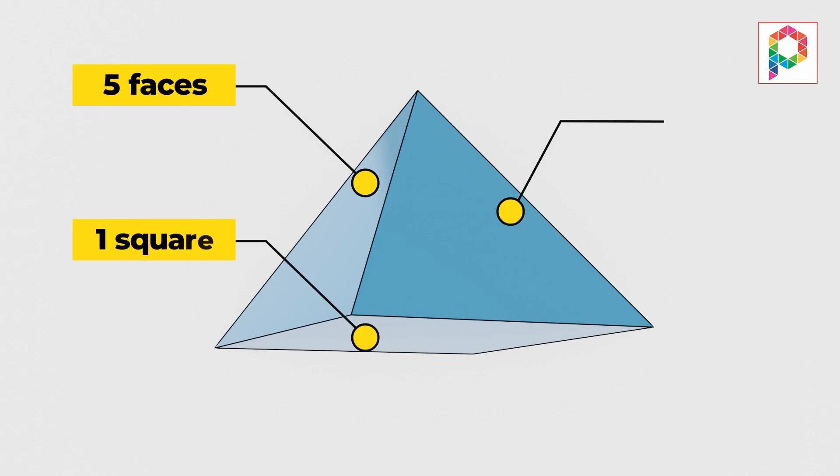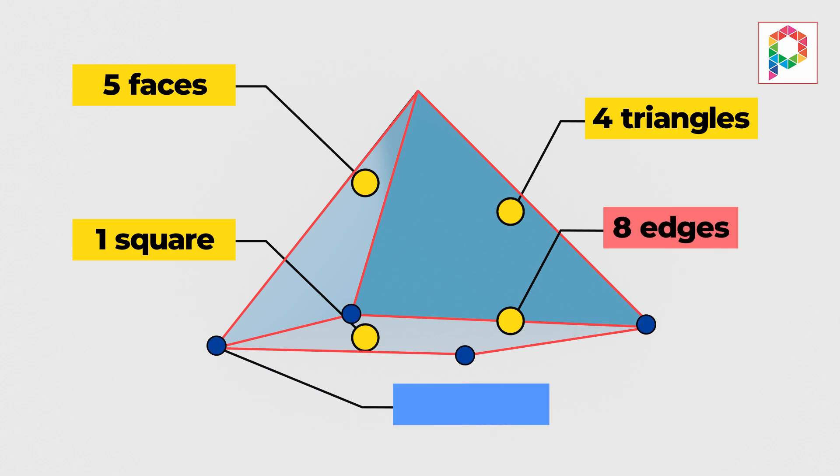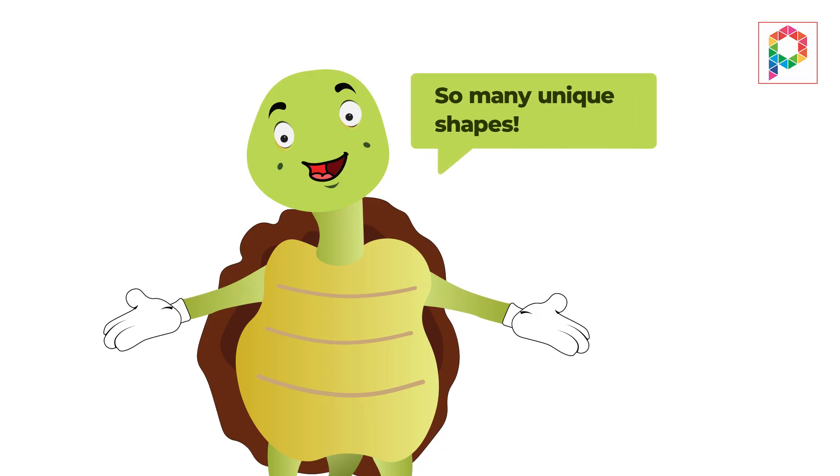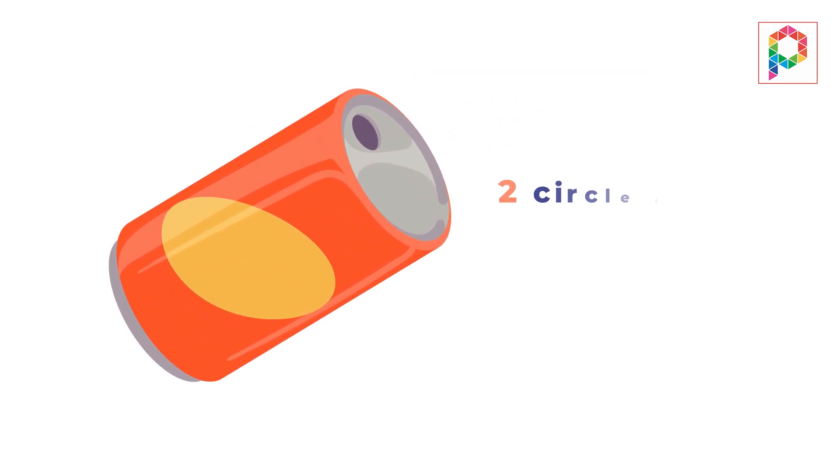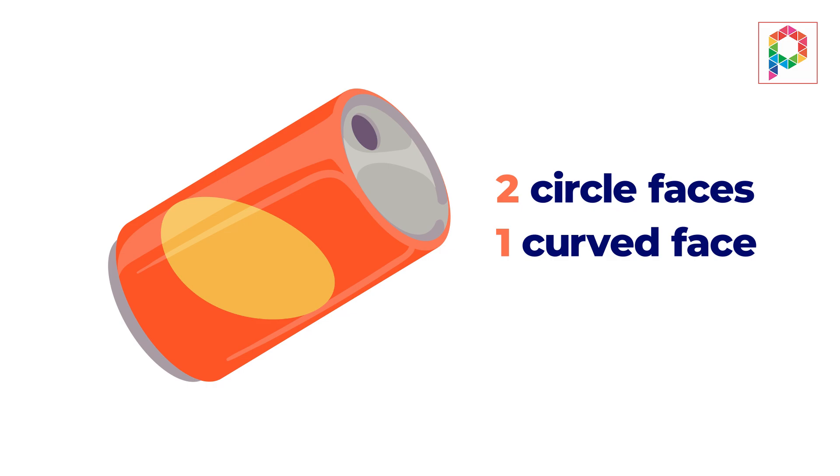A pyramid has five faces: one square and four triangles. It has eight edges and five vertices, including the point at the top. So many unique shapes! Now let's play a game. What shape is this? Hint: two circle faces and one curved face.